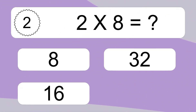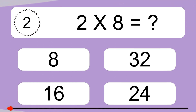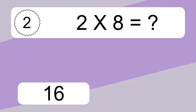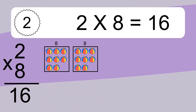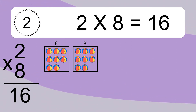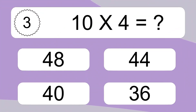2 times 8 equals what? 2 times 8 equals 16. We have 2 boxes, and each box has 8 colorful balls inside. If you count all the balls in all the boxes together, you will have 2 times 8 balls. This equals 16 balls.